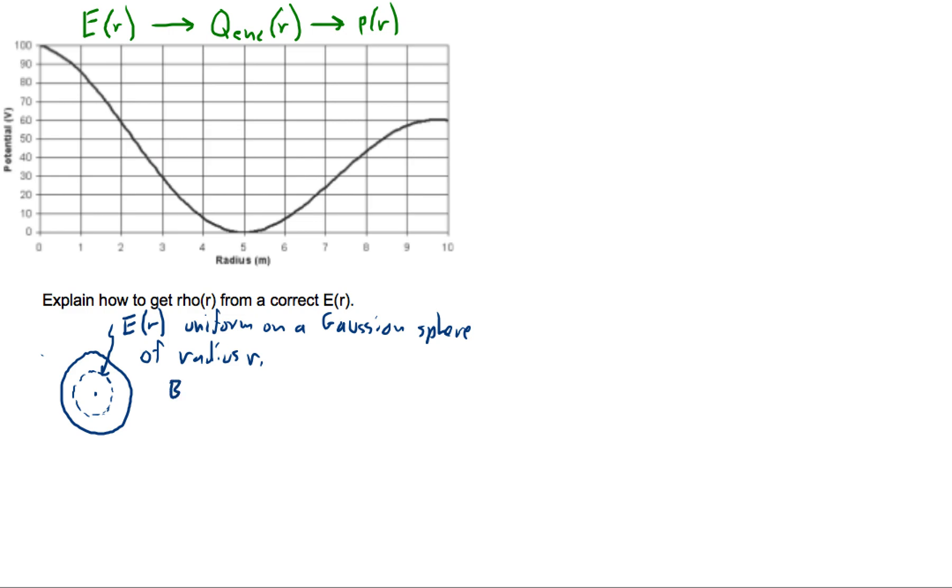So by Gauss's law, this E of R points outward everywhere, so the flux is going to be q enclosed as a function of R over epsilon naught, and flux is the integral of E dot n hat dA over the surface of the sphere, of the Gaussian sphere. That's going to be q enclosed over epsilon naught, q enclosed being a function of R.